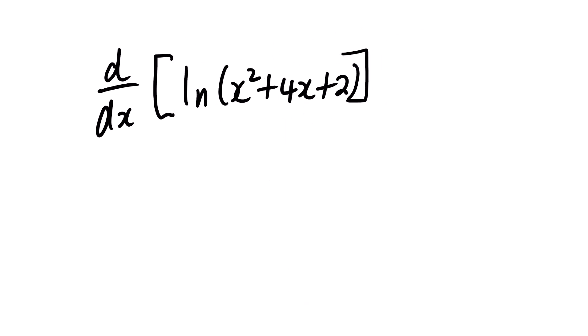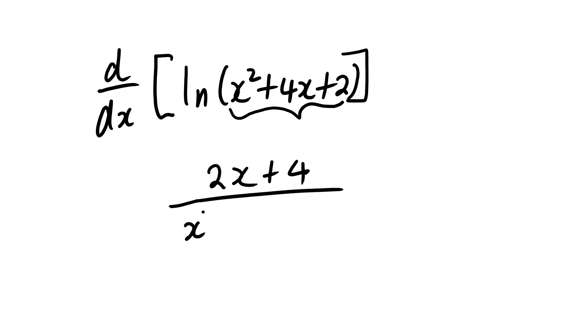For the next example, the derivative of ln(x² + 4x + 2) will be the derivative of what is inside — which is 2x + 4 — over x² + 4x + 2.